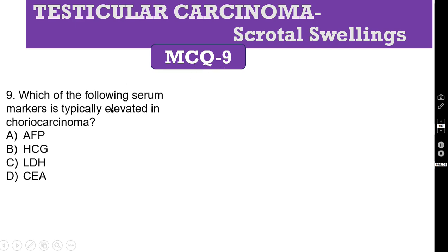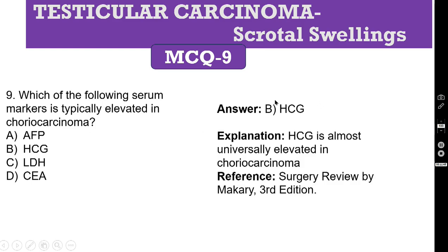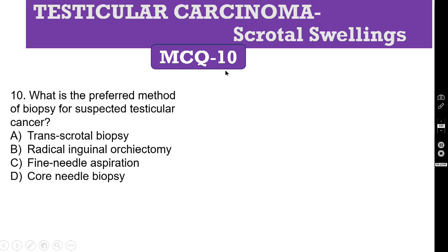MCQ 9. Which of the following serum markers is typically elevated in choriocarcinoma? A. AFP. B. HCG. C. LDH. D. CEA. The correct answer is B — HCG. HCG is almost universally elevated in choriocarcinoma. Reference: Surgery Review.